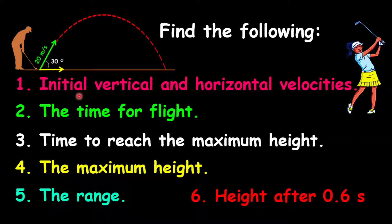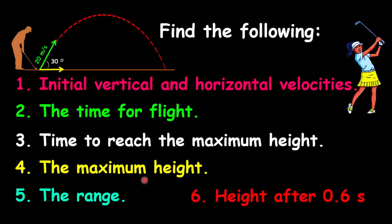We are going to determine: 1, the initial vertical and the horizontal velocities of the golf ball; 2, the time for the flight of the golf ball; 3, the time the golf ball took to reach its maximum height; 4, the maximum height reached by the golf ball; 5, the range or the horizontal distance covered by the golf ball; and 6, the height of the golf ball after 0.6 seconds.